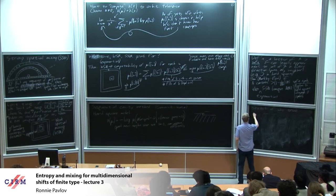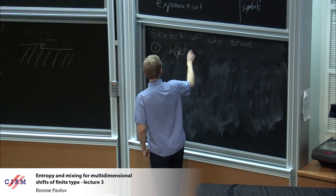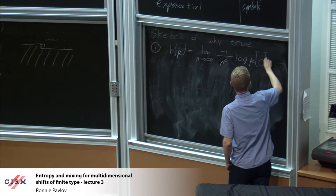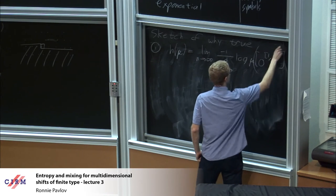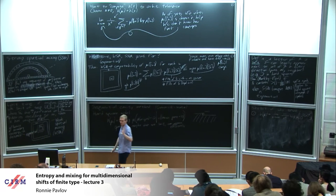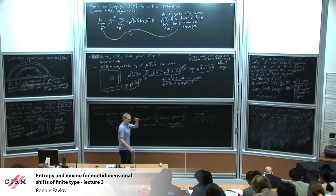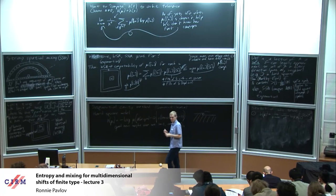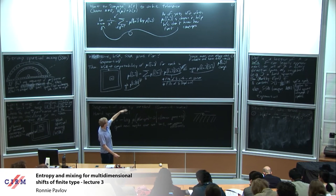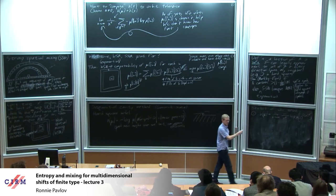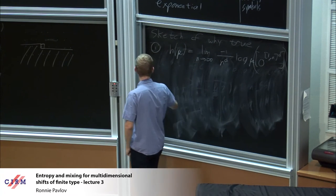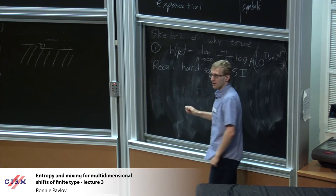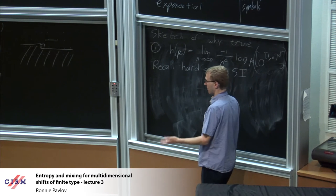Here's just the briefest sketch of why this is true. I'm not doing this to subject you to a proof — it's more to show you the barest hint of why it's true so we can answer the question of how we could extend it beyond the hard square model. Step one: what I want to say is that h of mu is equal to the limit as n goes to infinity of negative 1 over n^d times log of mu of putting all zeros on an n-cube. Take the probability that you put all zeros on a big n-cube, take the log of it, take negative 1 over n^d, and I claim that's the limit we get for h of mu.